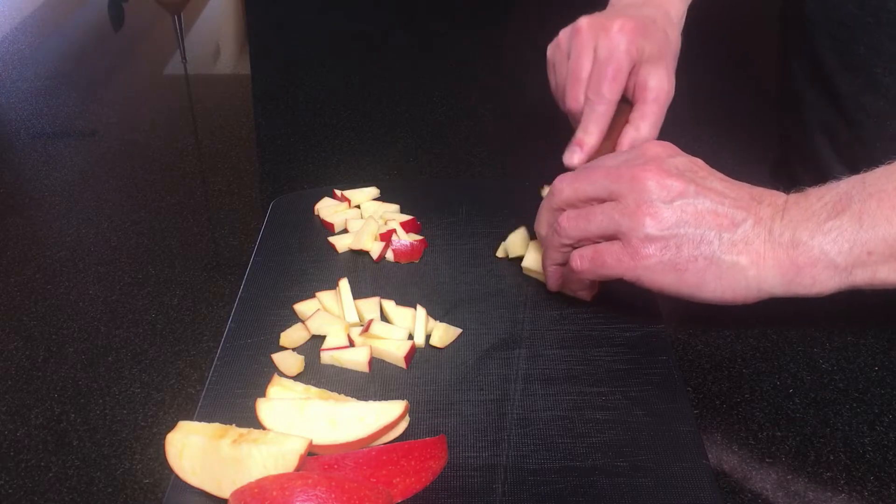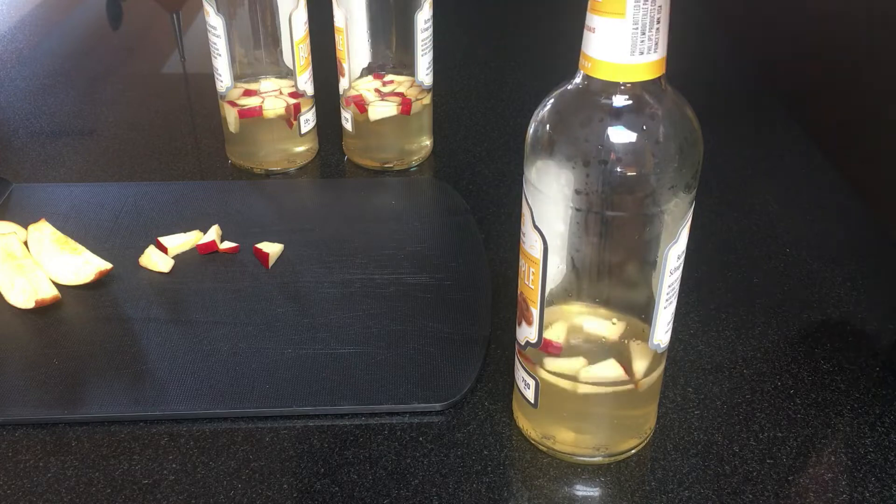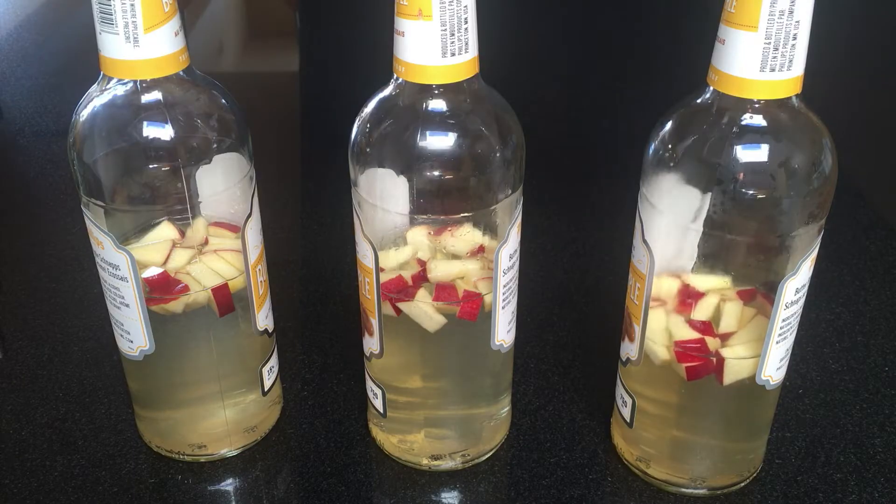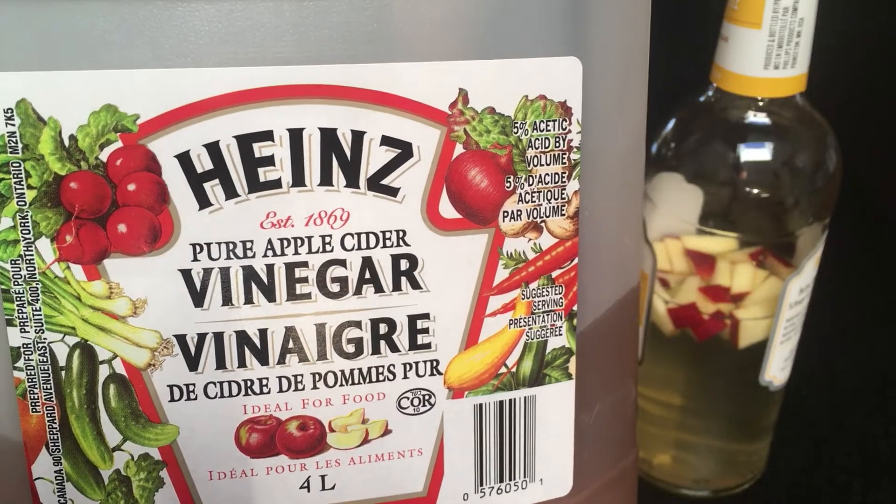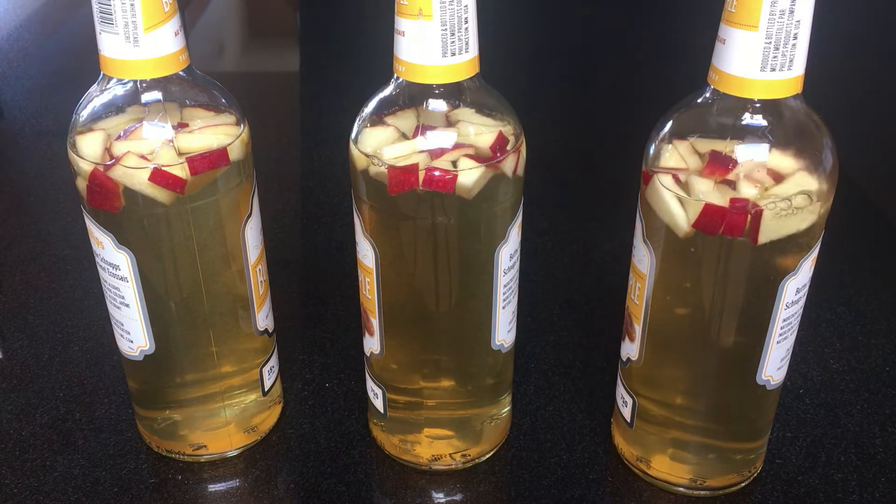Then I cut up one slice of fresh apple for each bottle. The precise amount isn't important. Next, I added enough dechlorinated water to fill each bottle halfway. Then I added apple cider vinegar to bring the level up to the shoulder of the bottle.